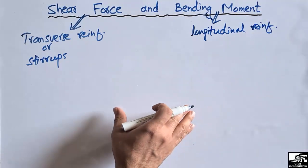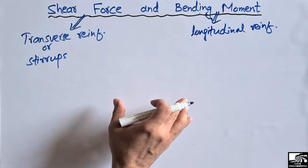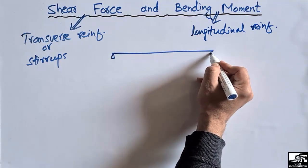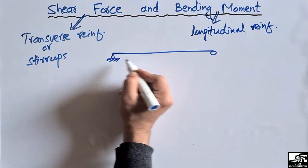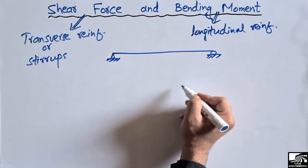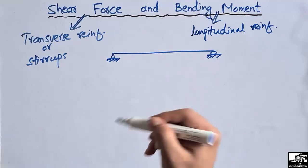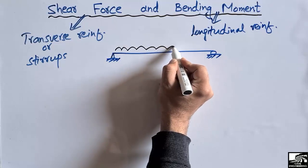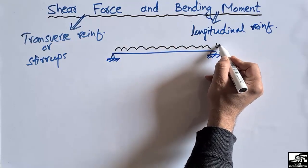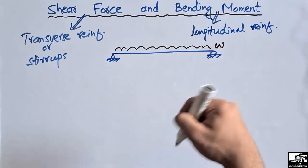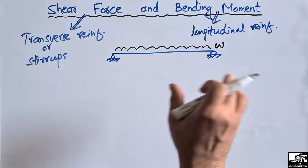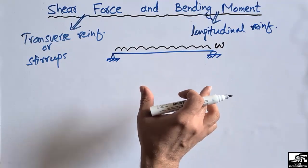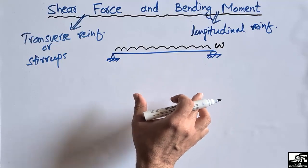To explain in detail, I will take one example. Consider a simply supported beam — this is a hinge support and this is the roller support. The beam is loaded with a uniformly distributed load of w. Due to this load the beam will try to deflect, and it will create shear stresses and will also bend.